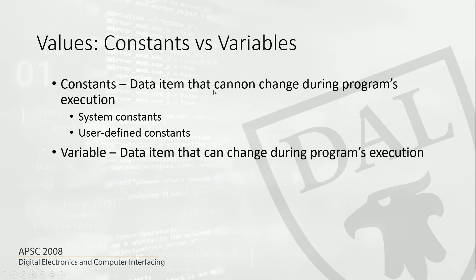In the next slide, we're going to talk about values. Values can be constants or variables. Constants are data items that cannot change during a program's execution. For example, the value pi is approximately equal to 3.14. We define it as 3.14, and during the program execution it is always going to be 3.14. Once you define a constant, it is not going to change during program execution. That is a constant.